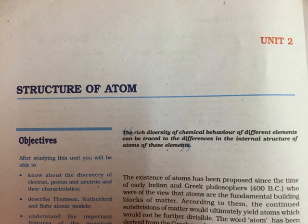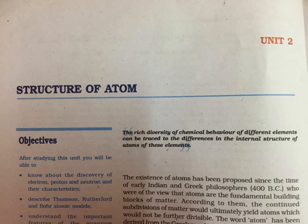Section 2.2.1: Thomson Model of Atom. J.G. Thomson in 1898 proposed that an atom possesses a spherical shape in which the positive charge is uniformly distributed. The electrons are embedded into it in such a manner as to give the most stable electrostatic arrangement. Many different names are given to this model — for example, plum pudding, raisin pudding, or watermelon. This model can be visualized as a pudding or watermelon of positive charge with plums or seeds embedded into it. An important feature is that the mass of the atom is assumed to be uniformly distributed. Although this model was able to explain the overall neutrality of the atom, it was not consistent with the results of later experiments. Thomson was awarded Nobel Prize for Physics in 1906 for his theoretical and experimental investigations on the conduction of electricity by gases.